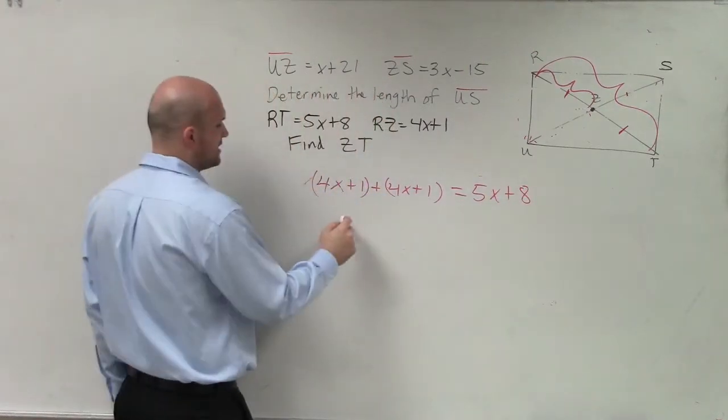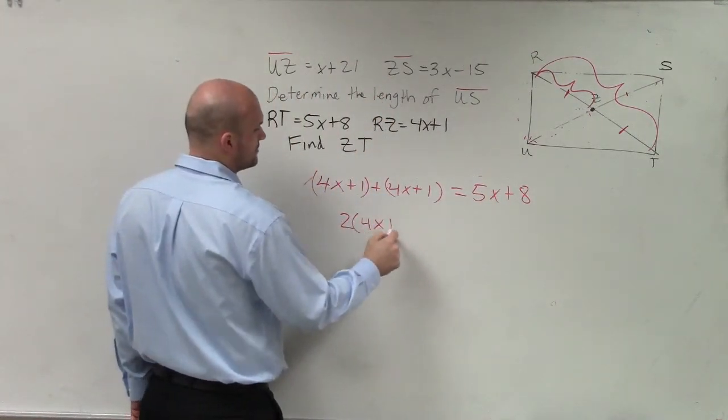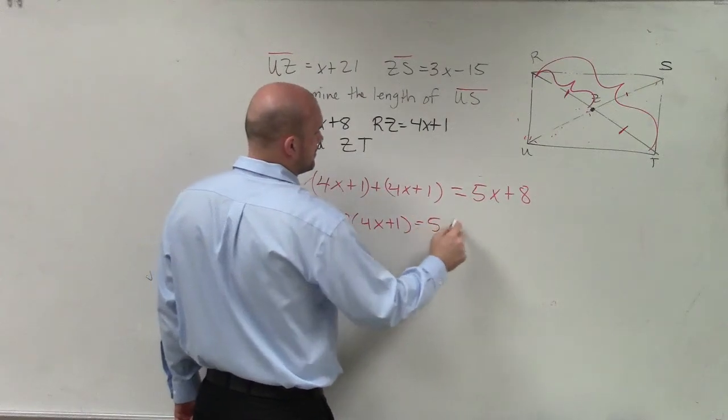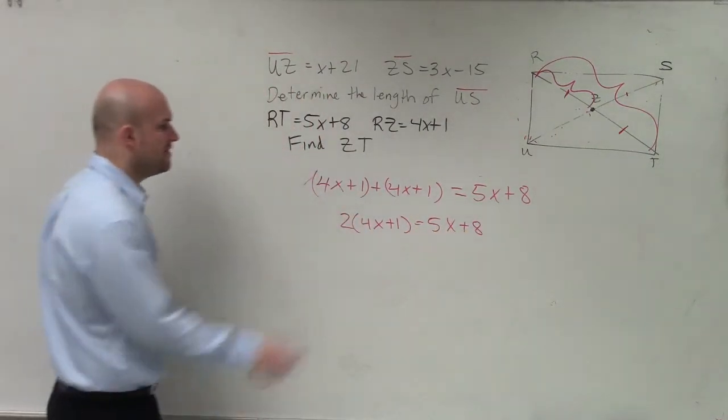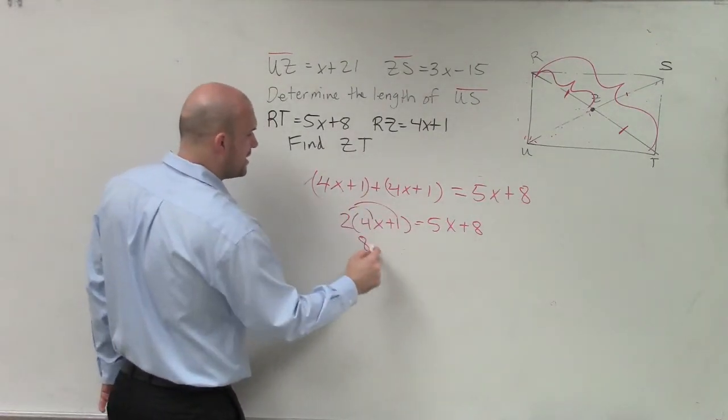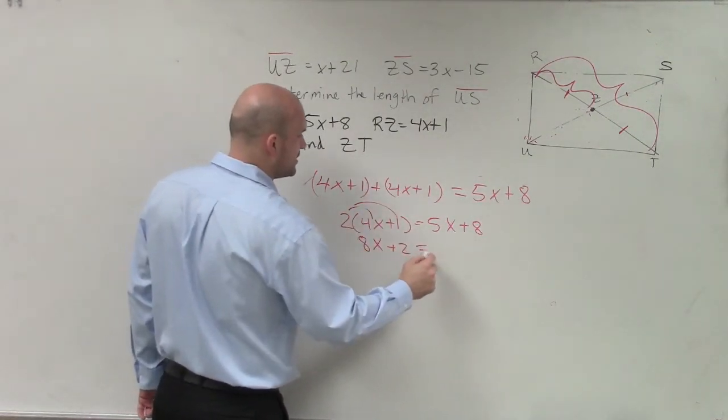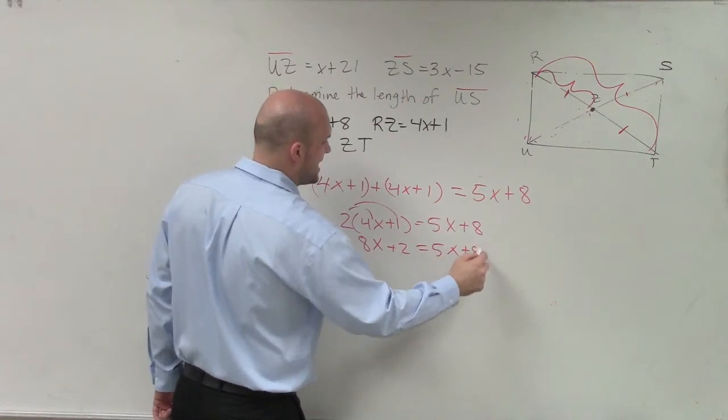You could also write it like this. Right? Either way, it's really the same thing. And then apply distributive property or combine like terms. And what you have is 8x plus 2 equals 5x plus 8.